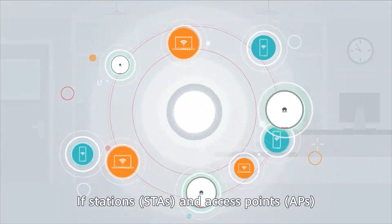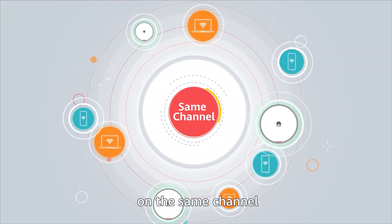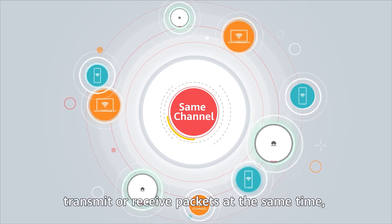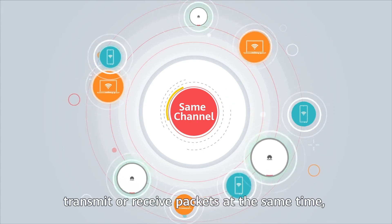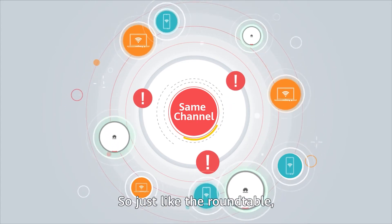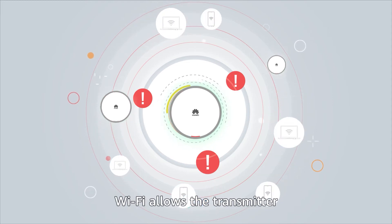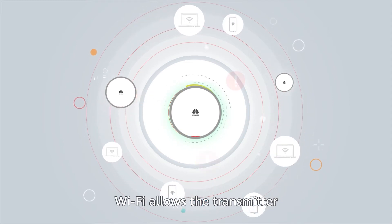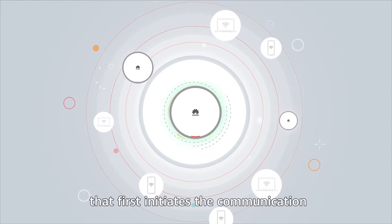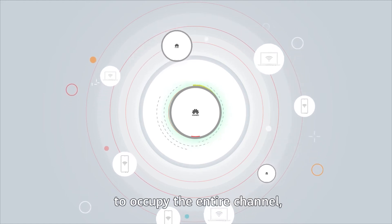If stations and APs on the same channel transmit or receive packets at the same time, it leads to interference. So just like the roundtable, Wi-Fi allows the transmitter that first initiates communication to occupy the entire channel while other APs and stations stay silent.